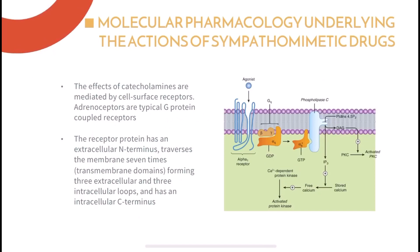For the molecular pharmacology underlying the actions of sympathomimetic drugs, the effects of catecholamines are mediated by cell surface receptors. Adrenoreceptors are typical G-protein coupled receptors. The receptor protein has an extracellular N-terminus, traverses the membrane seven times forming three extracellular and three intracellular loops, and has an intracellular C-terminus.